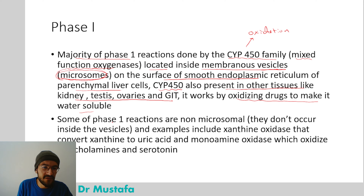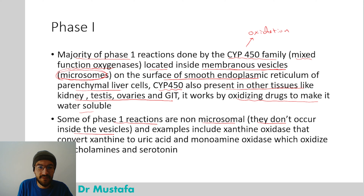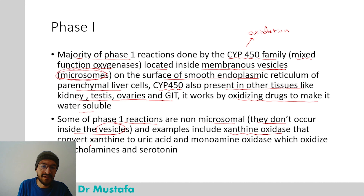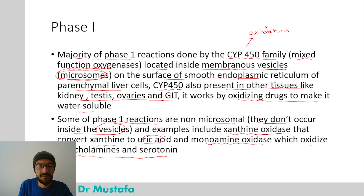Some phase one reactions are non-microsomal, meaning they don't occur inside the membranous vesicles. Examples include xanthine oxidase, which converts xanthine to uric acid, and monoamine oxidase (MAO), which oxidizes catecholamines and serotonin.